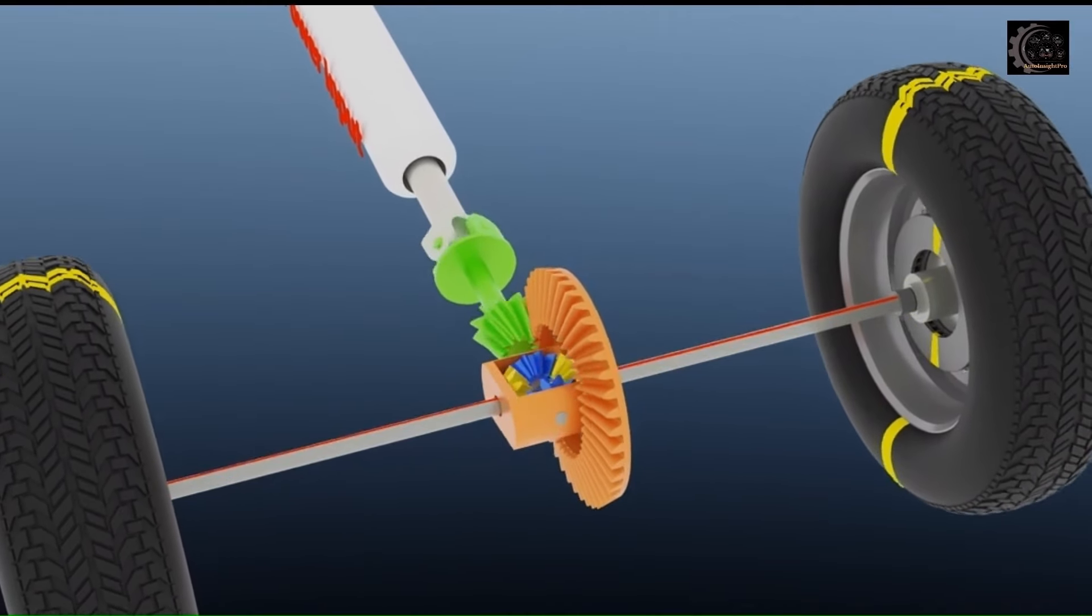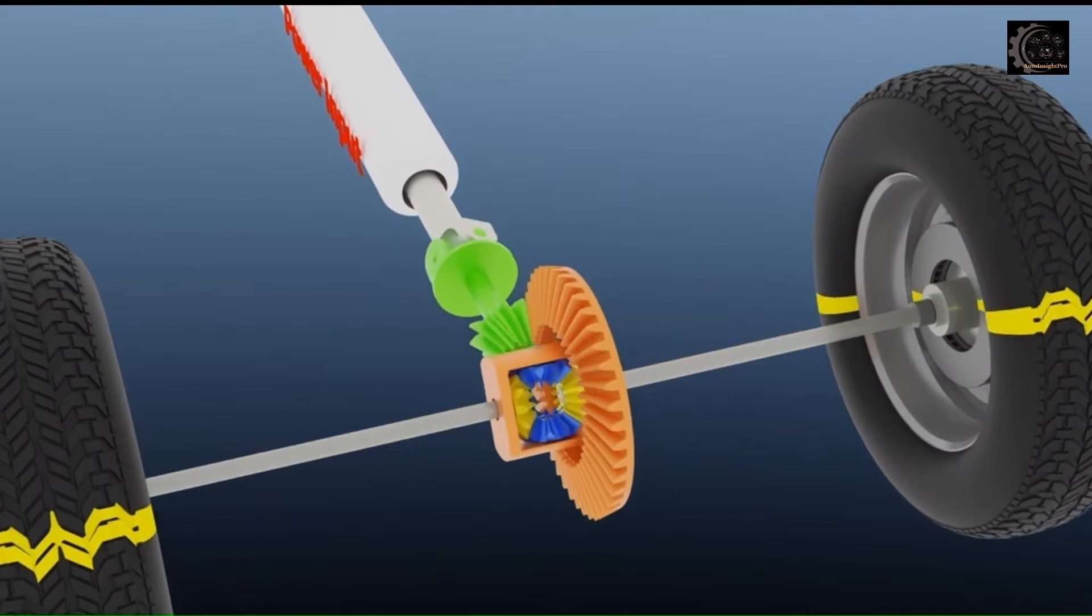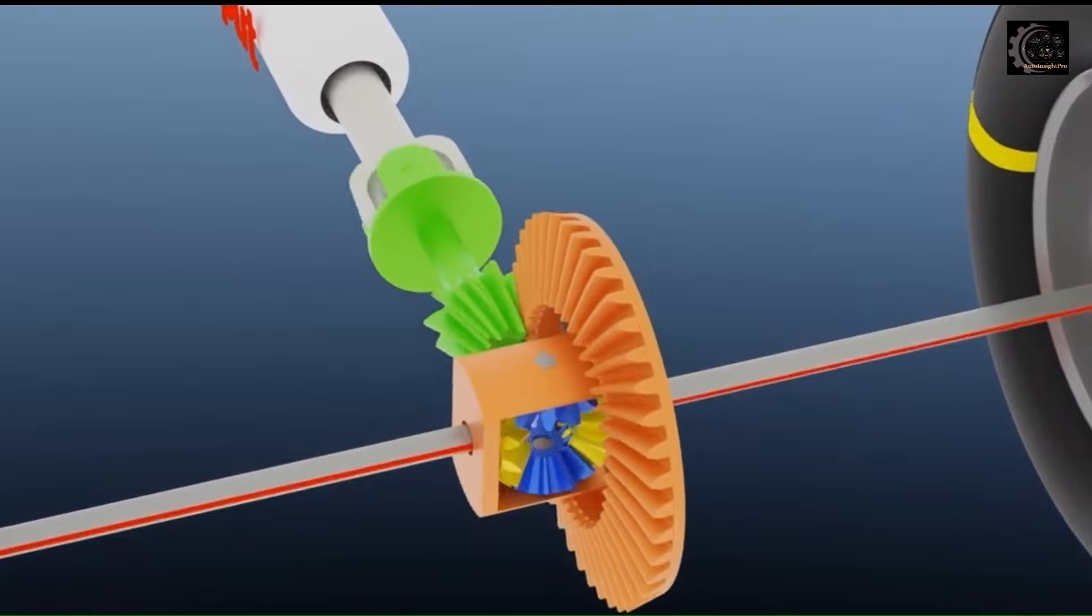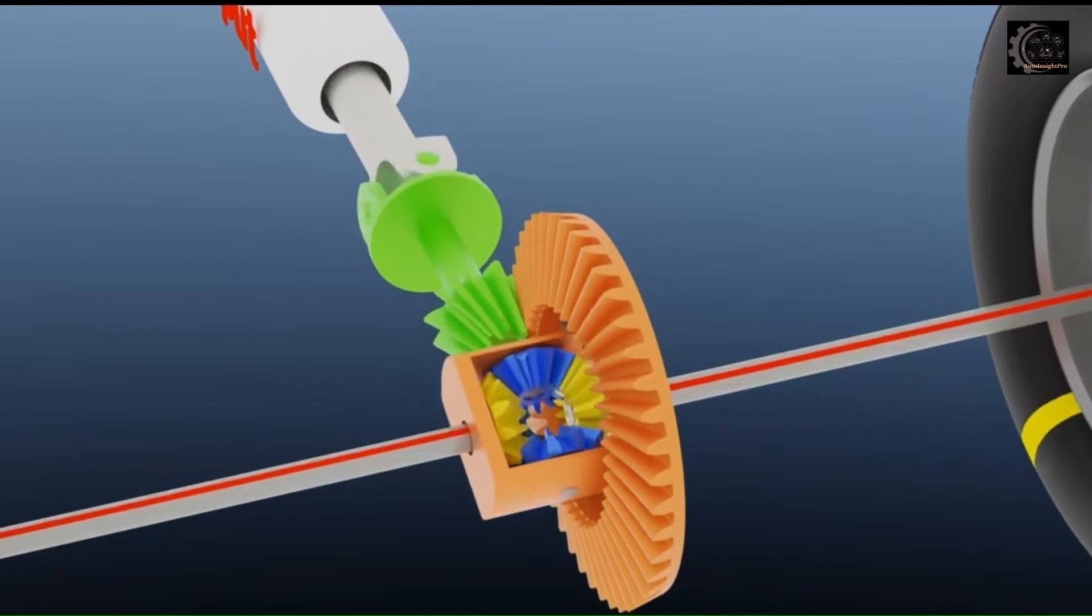On a straight road, when both wheels have the same amount of traction, spider and sun gears unit rotate as a single unit. So both side wheels rotate at same speed.